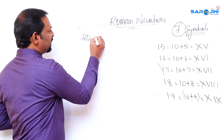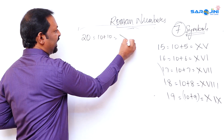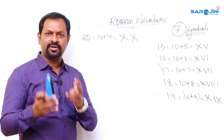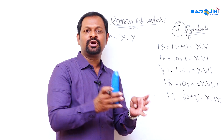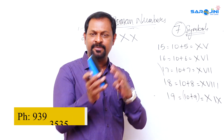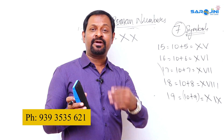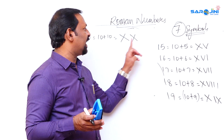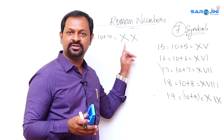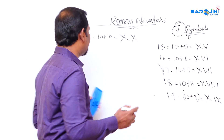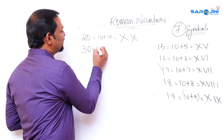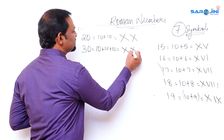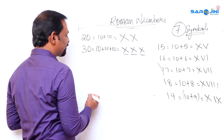Twenty is ten plus ten, written as XX. From here you can write any number by adding the ones digits you already know after XX. Twenty-one is XXI, twenty-two is XXII, twenty-three is XXIII, twenty-four is XXIV, twenty-five is XXV, and so on. Thirty is ten plus ten plus ten, which is XXX.